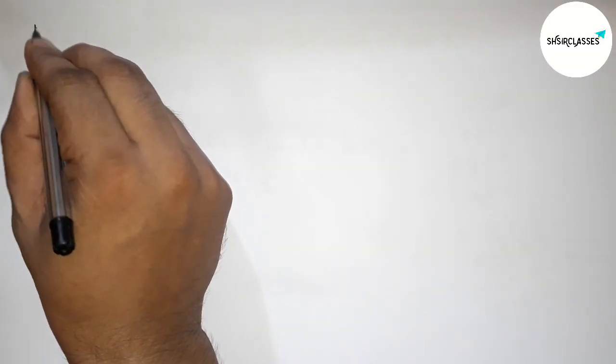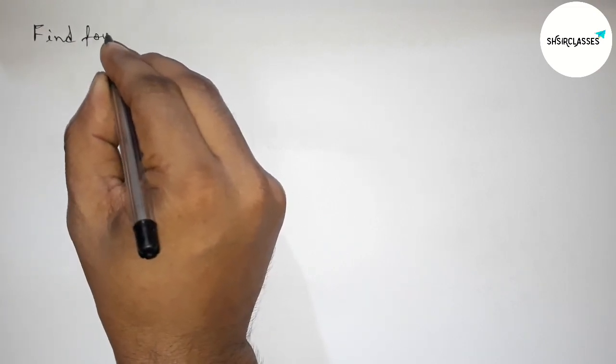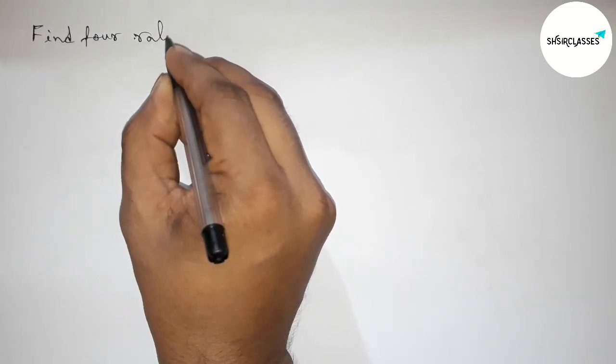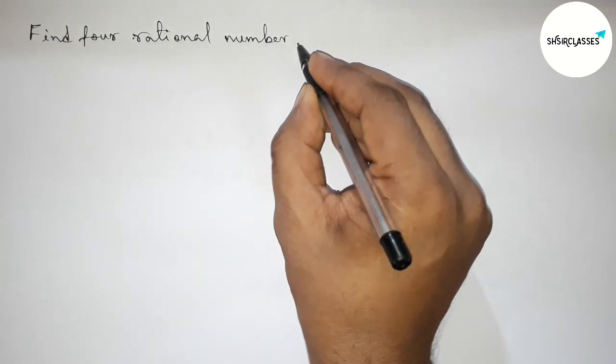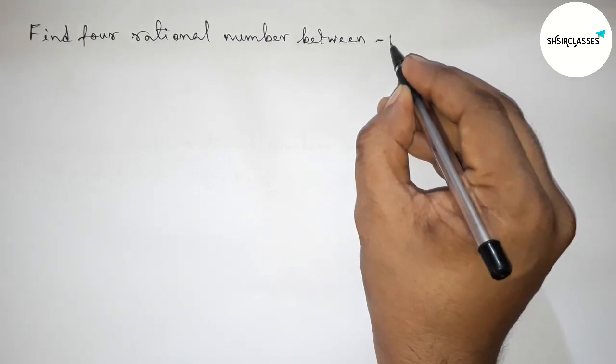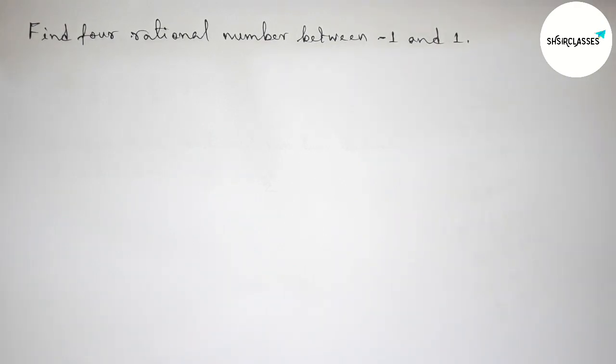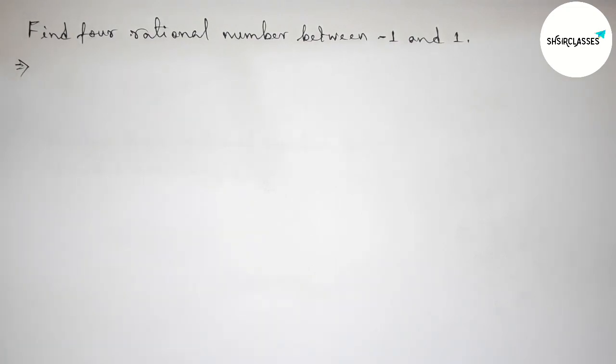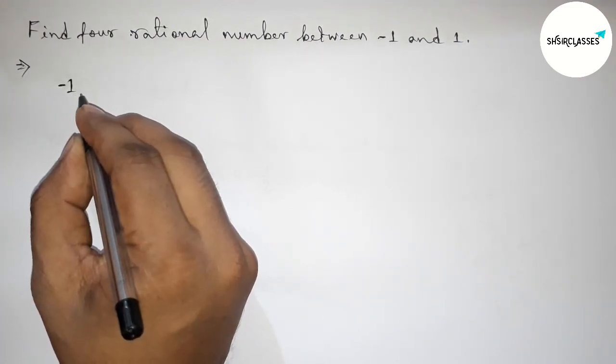Hi everyone, welcome to essay share classes. Today in this video we have to find four rational numbers between minus one and one in an easy way. So please watch the video till the end. Let's start the video. First of all, let us solve this problem. So here between minus one and one we have to find four rational numbers.